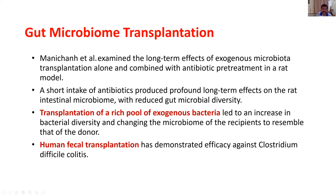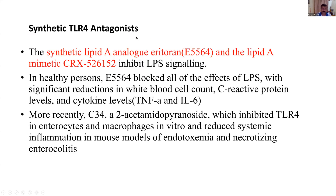Gut microbiome transplantation may help in treating many conditions, and this needs to be further determined. Another important upcoming approach is the synthetic TLR-4 antagonist. TLR-4 induction leads to the release of inflammatory cytokines, so blocking this receptor may reduce inflammatory levels within the gut. In one study in healthy persons, the synthetic lipid A analog Eritoran — a TLR-4 antagonist — blocked all effects of lipopolysaccharides with significant reduction in WBC counts, CRP levels, and cytokines. These are things that may come up in the future.